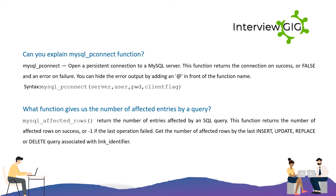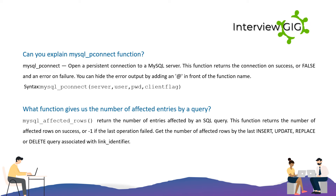Can you explain the mysql_connect function? mysql_connect opens a persistent connection to a MySQL server. This function returns the connection on success, or false and an error on failure. You can hide the error output by adding '@' in front of the function name. Syntax: mysql_connect(server, user, pwd, client_flag).